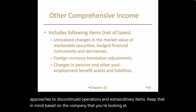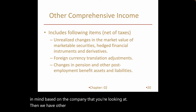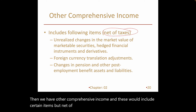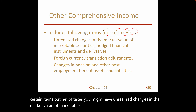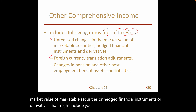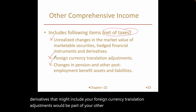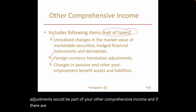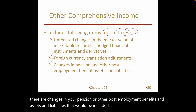Other comprehensive income includes certain items net of taxes, such as unrealized changes in the market value of marketable securities or hedged financial instruments and derivatives, foreign currency translation adjustments, and changes in pension or other post-employment benefit assets and liabilities.